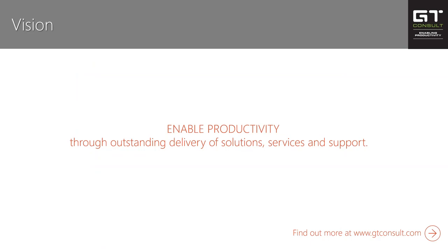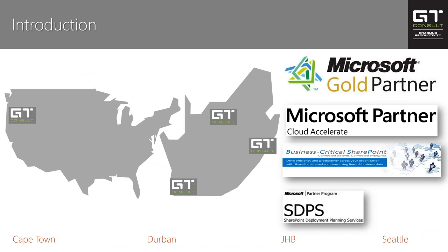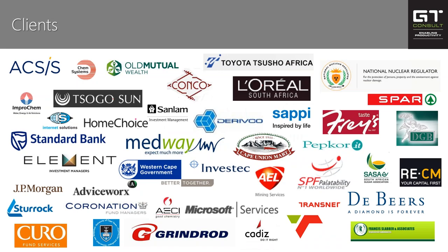At GT our motto is: enable productivity through outstanding delivery of solutions, services, and support. We are a Microsoft Gold Partner, a Microsoft Partner in the Cloud Accelerate Program, a Business Critical SharePoint Partner, and a SharePoint Deployment Planning Services partner. We have branches in Cape Town, Durban, Johannesburg, and Seattle, giving us a global presence. We've been in the game for just over four years with clients ranging across government, retail, mining, fast-moving consumer goods, and financial sectors.